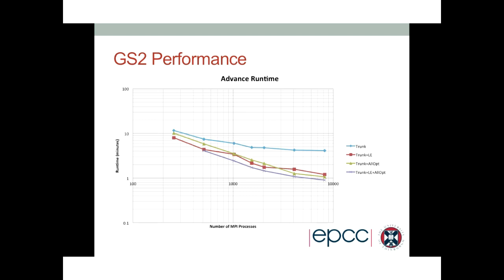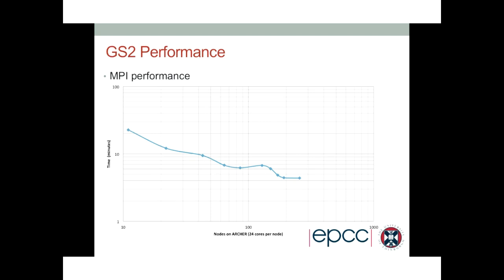This is the position we started this hybridization from: a lot of work had already been done to make GS2 scale well. But there is a point where the code stops scaling. This graph shows a reasonable simulation with full collisions, non-linear and linear calculations. The x-axis is number of nodes on Archer, with 24 cores per node — so from 256 cores on the left out to about 6,144 cores. We can see it scales okay to begin with, but at larger core counts performance flatlines.